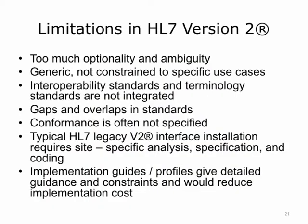HL7v2 has limitations. There are too many options and ambiguity in the specifications. It is too generic — intended to work with a wide variety of use cases instead of being fully constrained to specific use cases. It is not well integrated with terminology standards, there are gaps in functionality as well as overlaps with other standards, and conformance is not often well specified. As a result, making two systems interoperable when both use HL7v2 requires site-specific analysis, specification, and coding. When implementing HL7v2, the implementer should ideally implement an HL7v2 implementation guide or profile, which gives detailed guidance and constraints and would reduce implementation variance and cost.